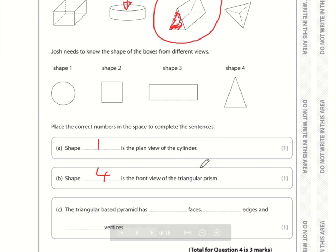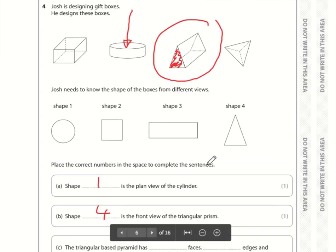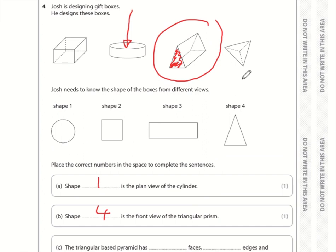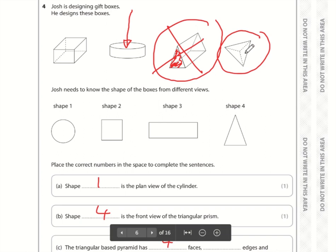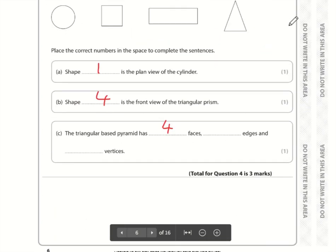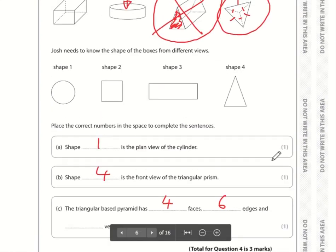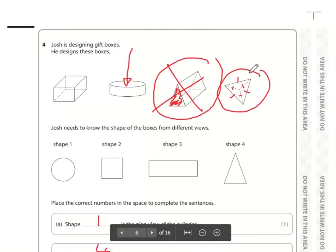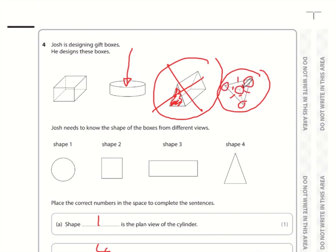The triangular based pyramid has how many faces, edges and vertices? This is the triangular based pyramid. Do not confuse it with the triangular prism. It's got 1, 2, 3, 4 faces. How many edges? It's got 1, 2, 3, 4, 5, 6 edges. And how many vertices? The vertices are the pointy bits. So 1, 2, 3 and a fourth one at the back there.